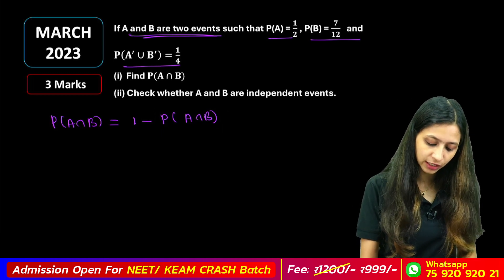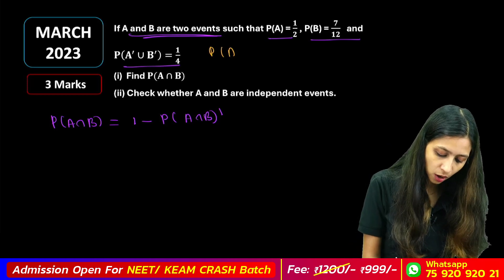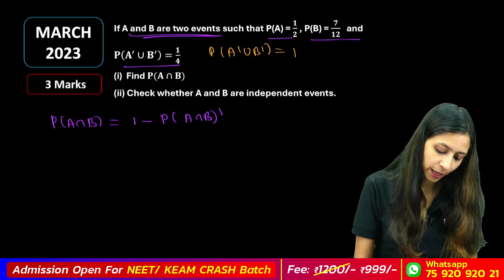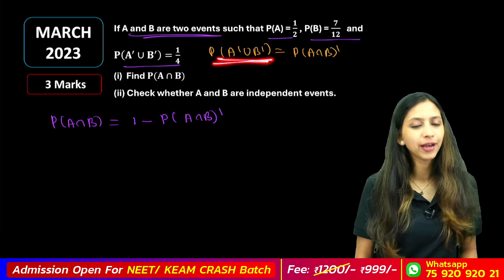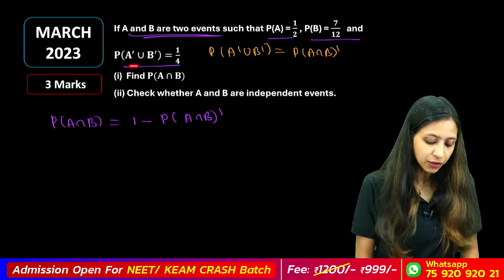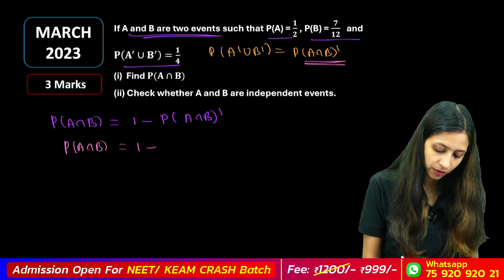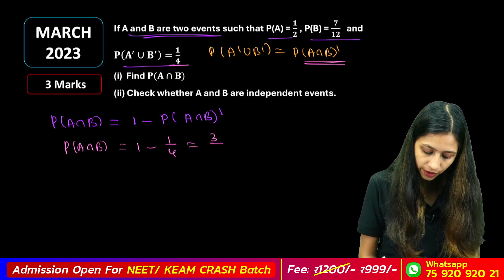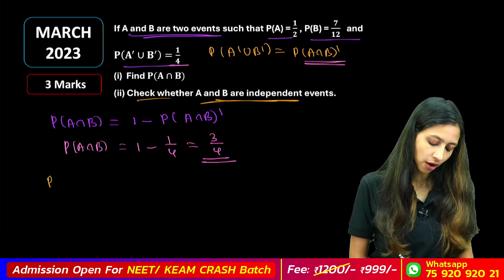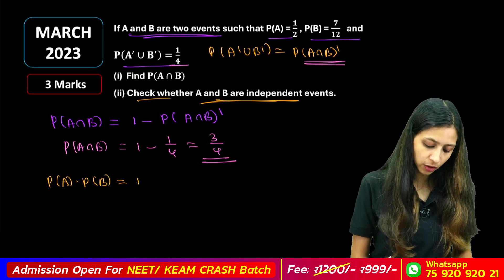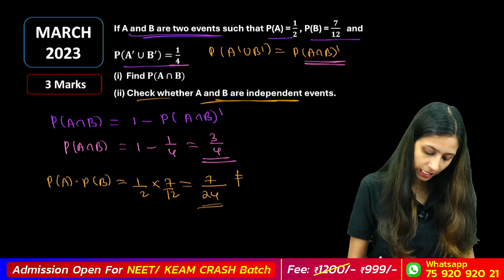1 minus P of A intersection B complement. P of A complement union B complement equals P of A intersection B whole complement. This is already 1 by 4, so that is 3 by 4. For independence: we check P of A into P of B equals 1 by 2 into 7 by 12, which gives 7 by 24. And P of A intersection B equals 7 by 24.